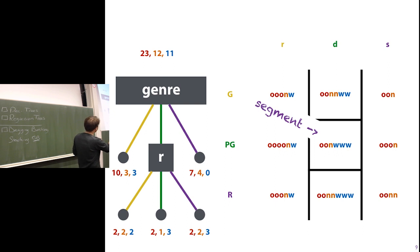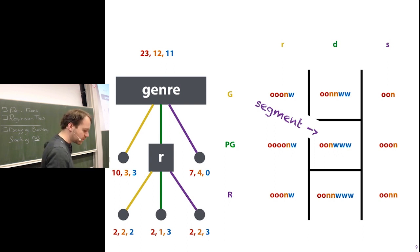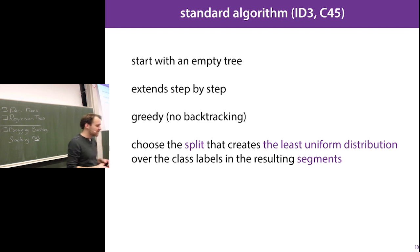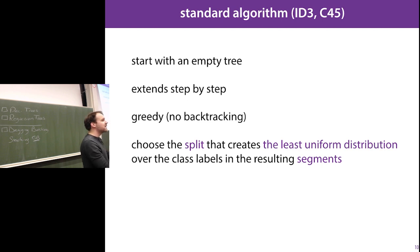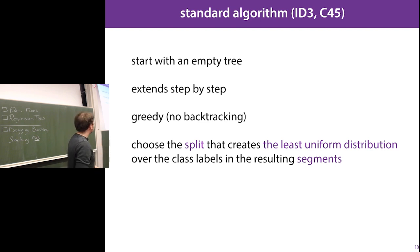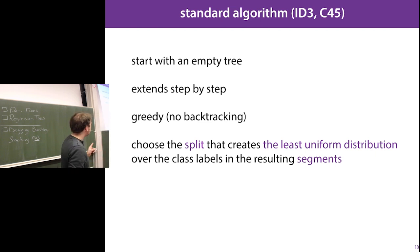Once we've chosen a feature like genre, we extend the tree by picking one of the leaves and selecting another feature to split on at that leaf. We call the subset of the data that hits a particular node a 'segment.' The basic principle: look for features that split your data into non-uniform class distributions, extend the tree greedily, with no backtracking, until you hit a stop condition.